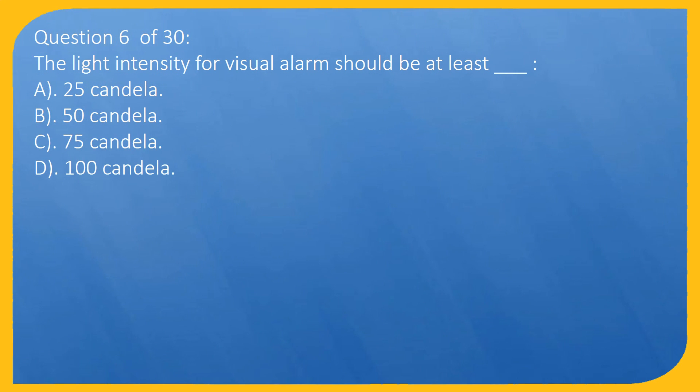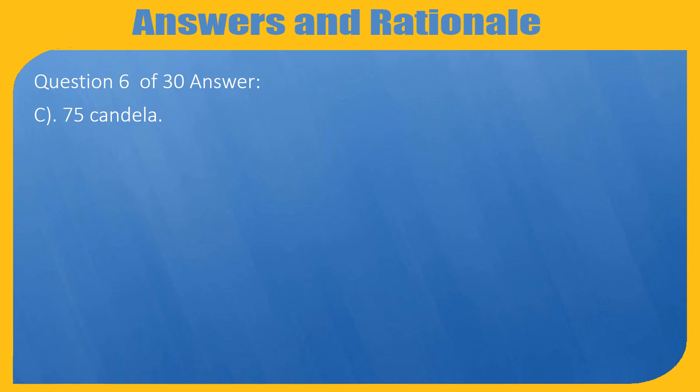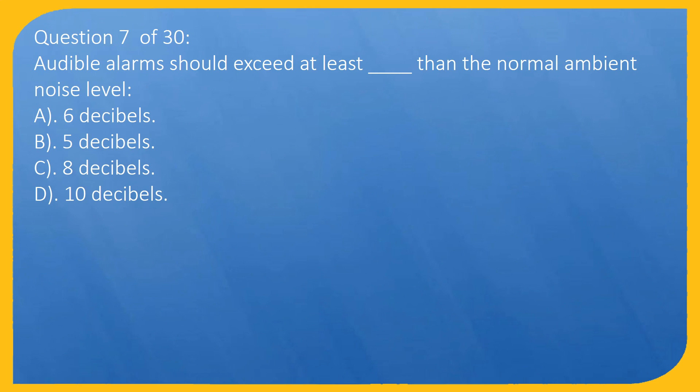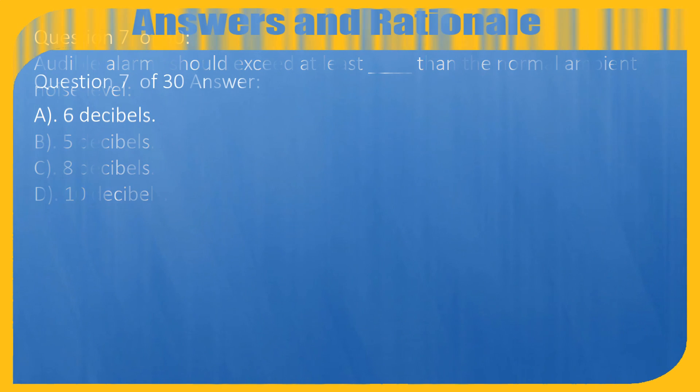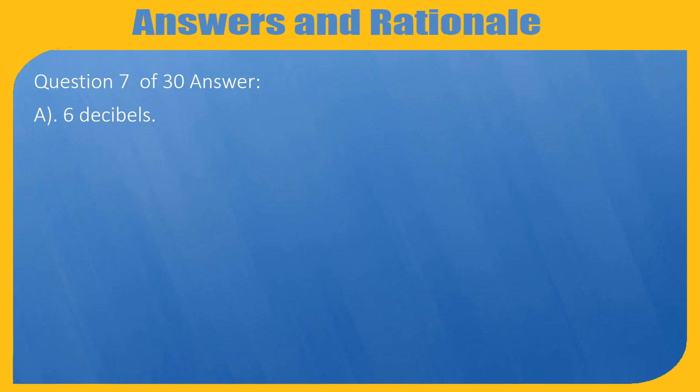Question 6 of 30: The light intensity for visual alarm should be at least: A. 25 candela, B. 50 candela, C. 75 candela, D. 100 candela. Answer: C. 75 candela. Question 7 of 30: Audible alarms should exceed at least how much more than the normal ambient noise level? A. 6 decibels, B. 5 decibels, C. 8 decibels, D. 10 decibels. Answer: A. 6 decibels.